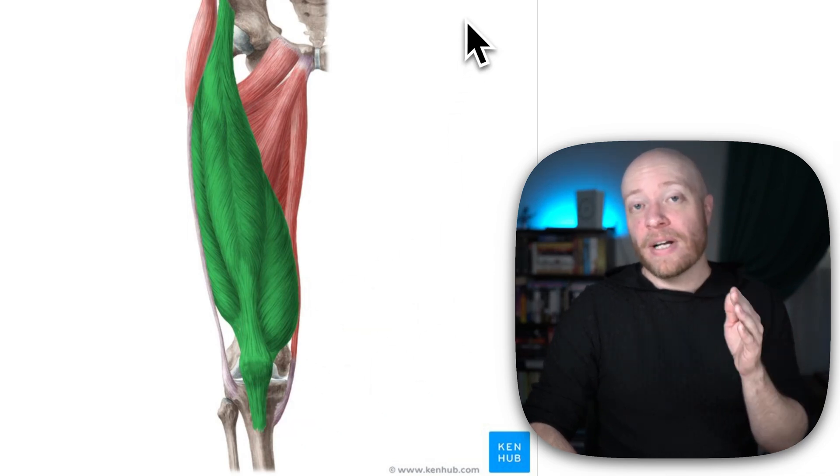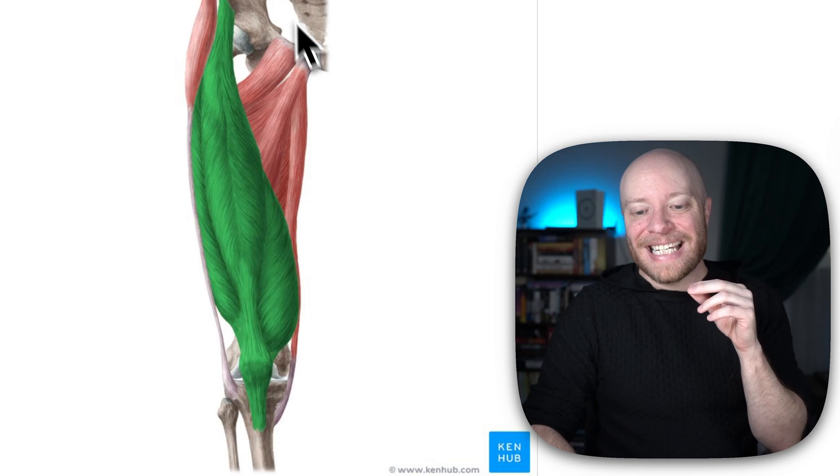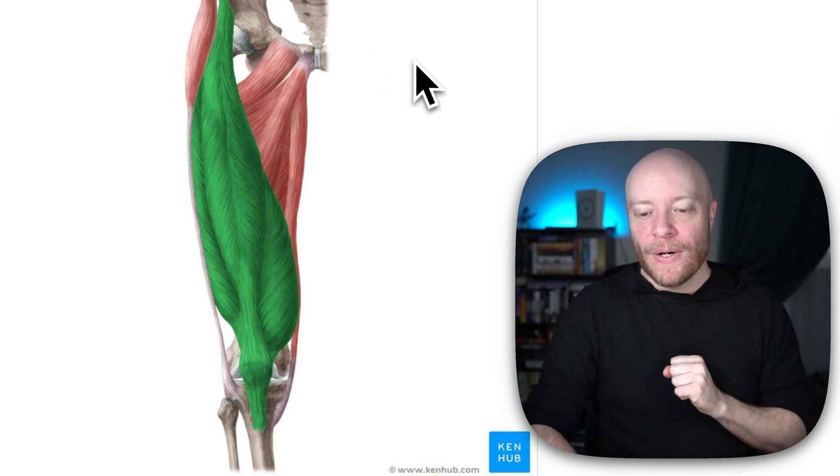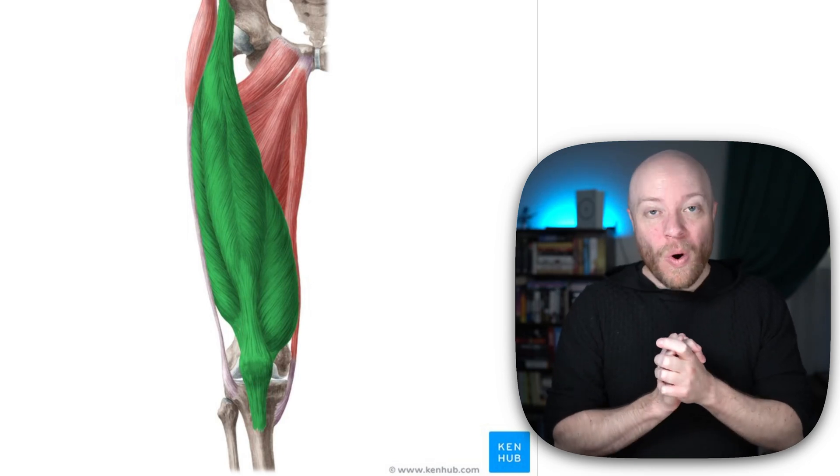All of them are going to extend the knee. That's the purpose of the quadriceps. But rectus femoris extends the knee while flexing the hip, which is a just unique action among the quadriceps.